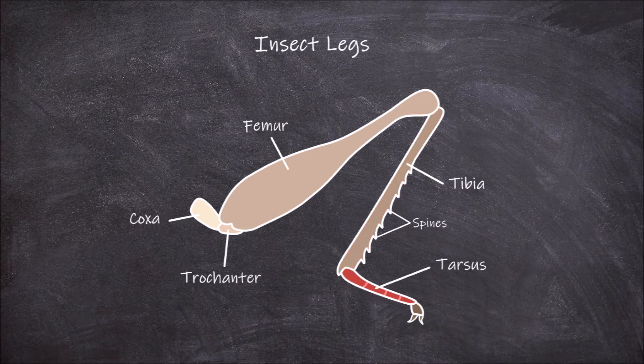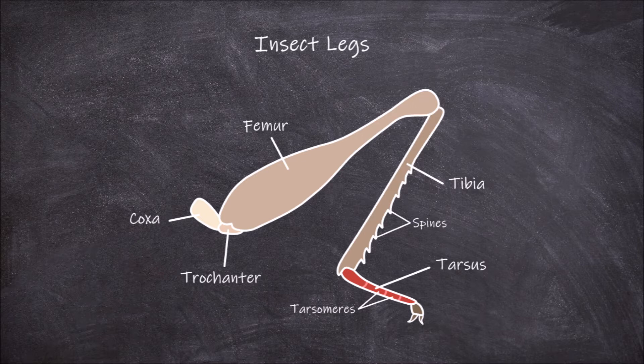The tarsus is the fifth segment. This segment is usually divided into sub-segments called tarsomeres. The tarsus articulates with the tibia proximally.